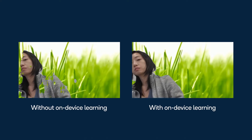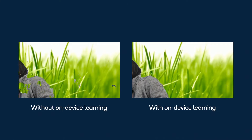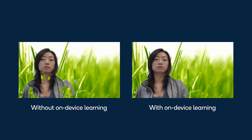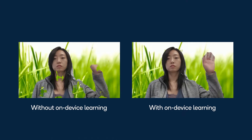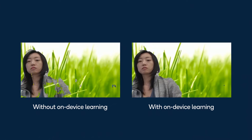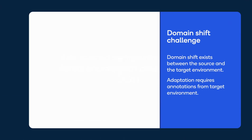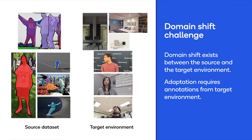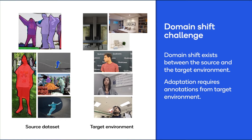For on-device segmentation, we need a lightweight model running fast inference. However, lightweight models generally produce poor segmentation results. Furthermore, there is a domain shift between the pre-training dataset on which the model is trained and user videos. Hence, there is a need for adaptation, but it requires annotations from user videos.